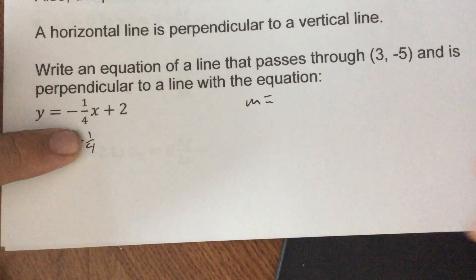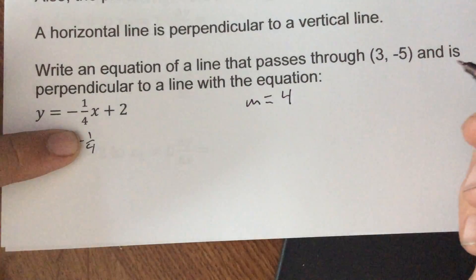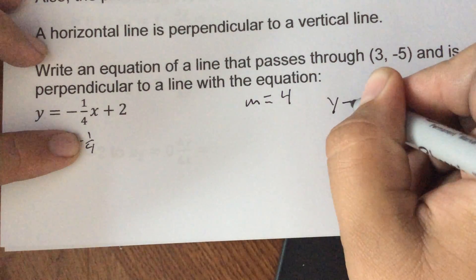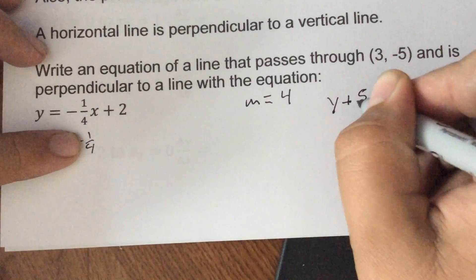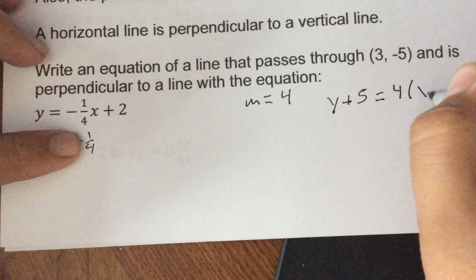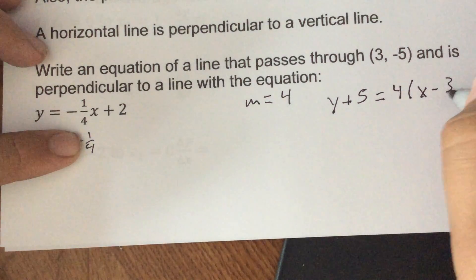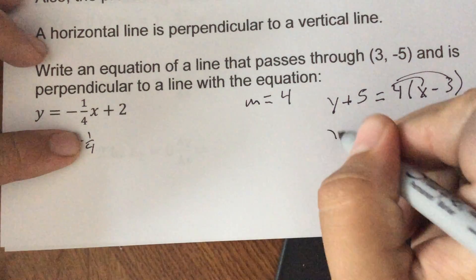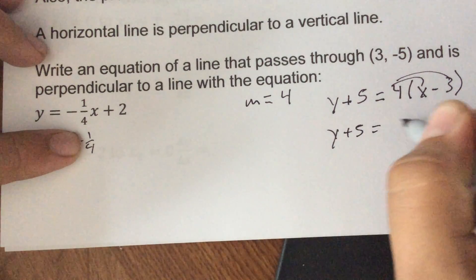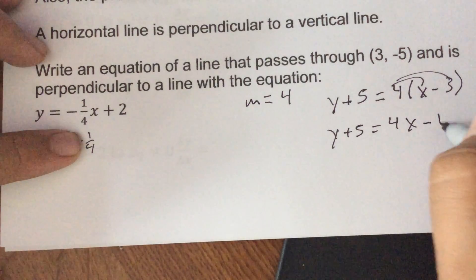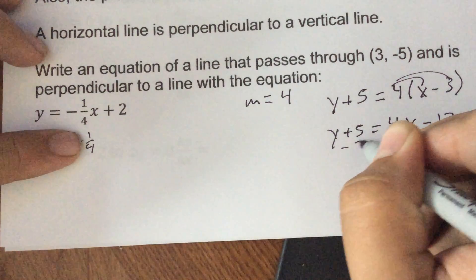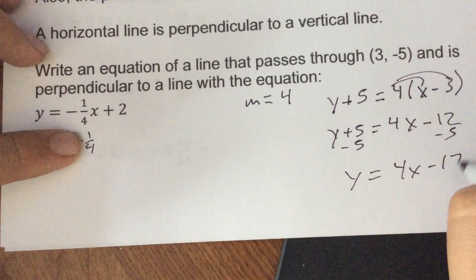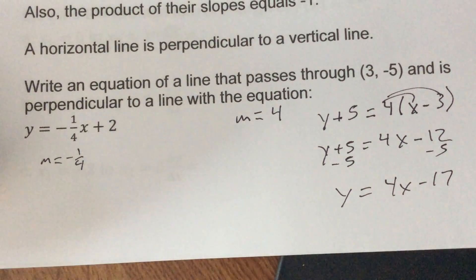So y minus y of our point would be plus 5 equals 4 parentheses x minus x of our point which is 3. So distribute your 4 in, y plus 5 would equal 4x minus 12, and then we subtract 5 so y would equal 4x minus 17 would be our answer there.